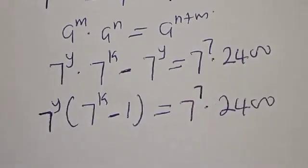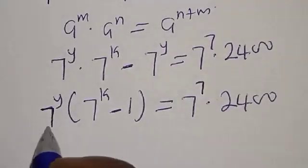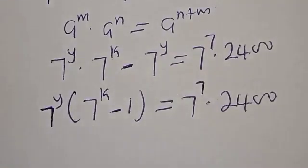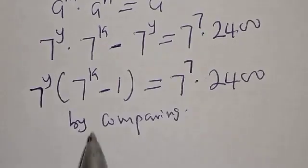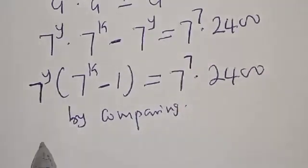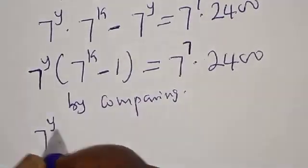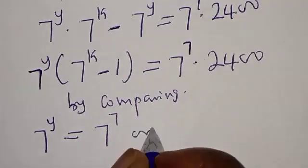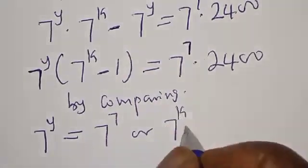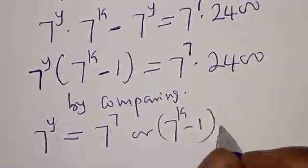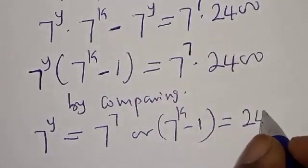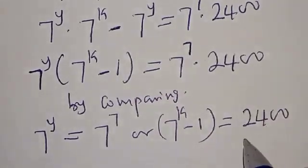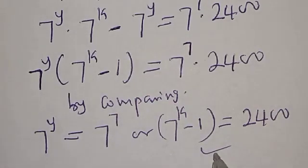Now, by comparing both sides, we have two cases. Case 1: 7 raised to power y is equal to 7 raised to power 7. Case 2: 7 raised to power k minus 1 is equal to 2400.